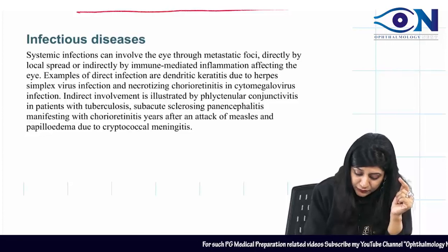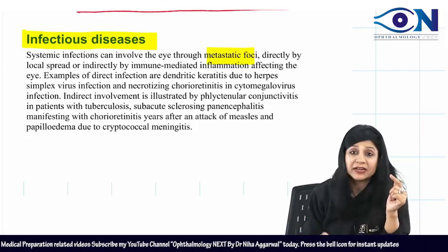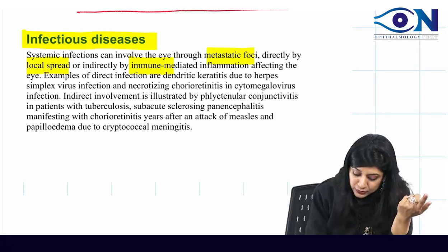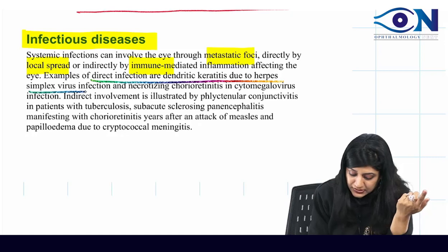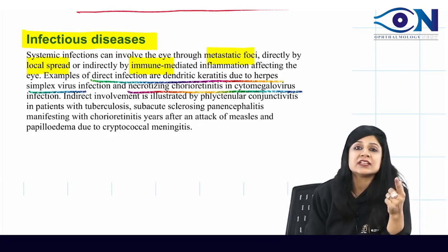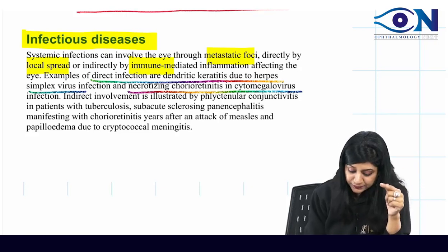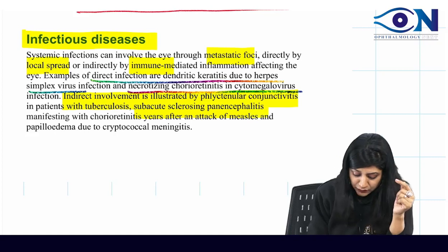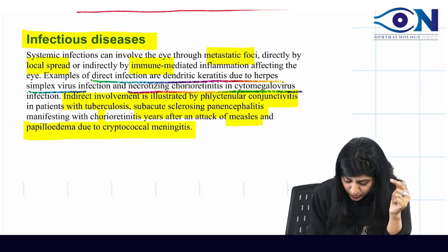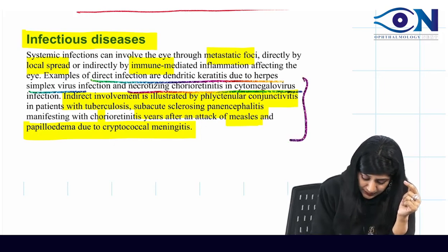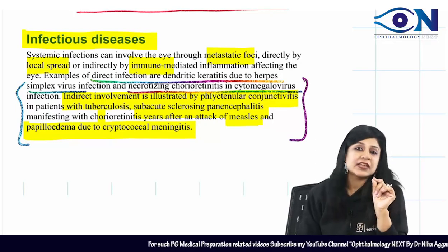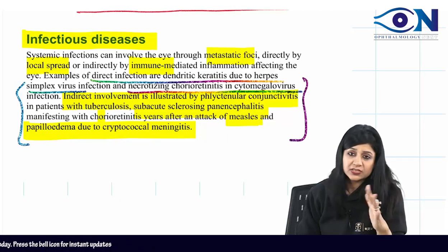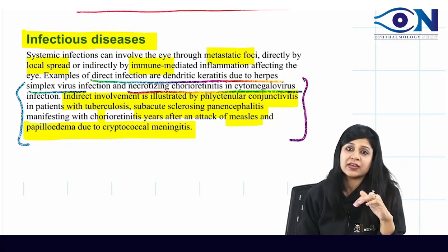In infectious diseases, systemic infections can affect the eye through metastasis, local spread, or immune-mediated mechanisms. Direct examples include dendritic keratitis due to herpes simplex, and necrotizing chorioretinitis found with cytomegalovirus. Indirect examples include phlyctenular conjunctivitis, subacute sclerosing panencephalitis after measles, papilledema in cryptococcal meningitis. You can add these associations to the main topics you have already studied.